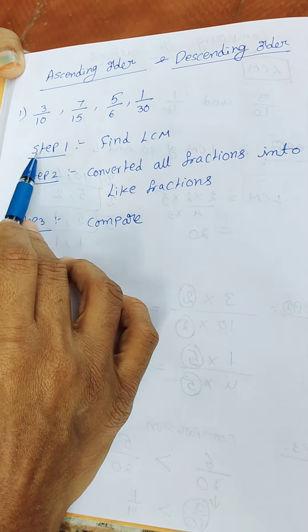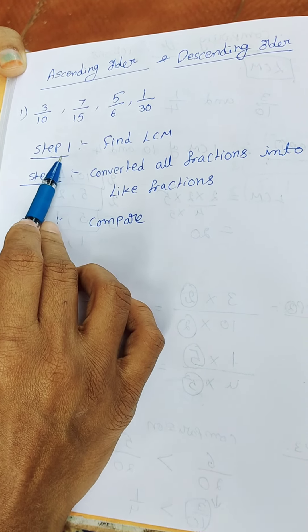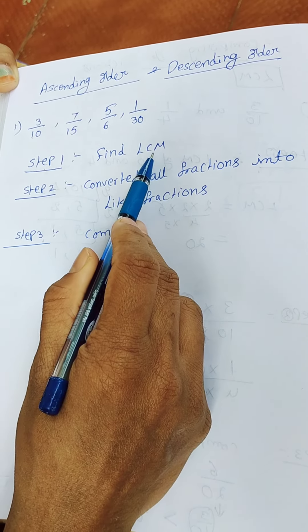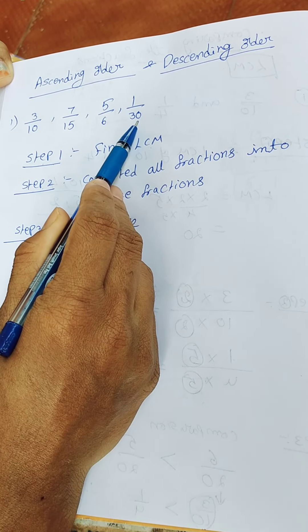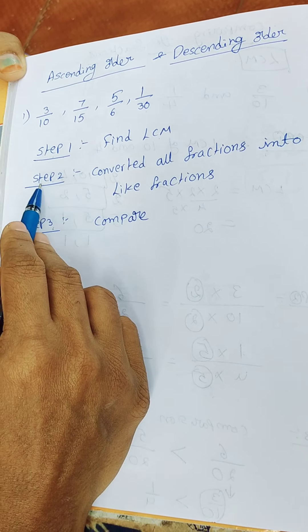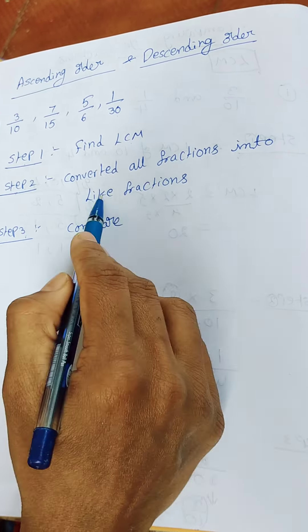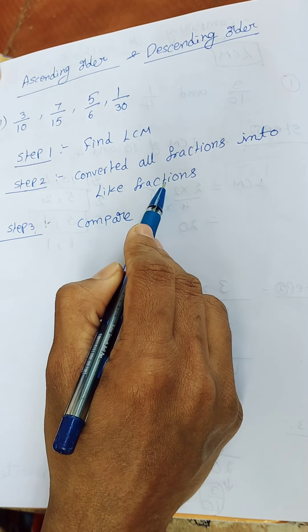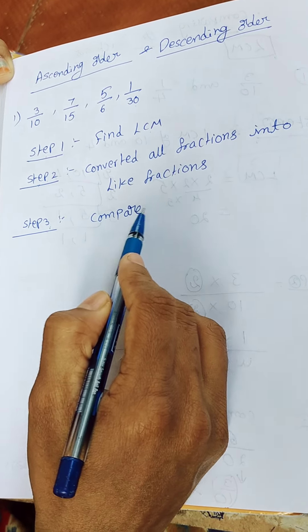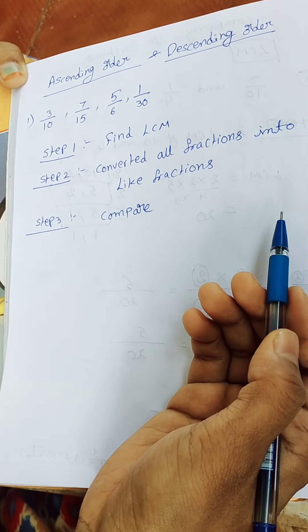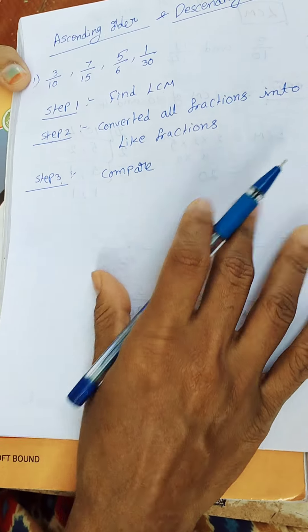For this sum, we have 3 steps. In step 1, we find the LCM of the denominators. In step 2, we convert all the fractions into like fractions. And in step 3, we compare the fractions and write the ascending order or descending order.